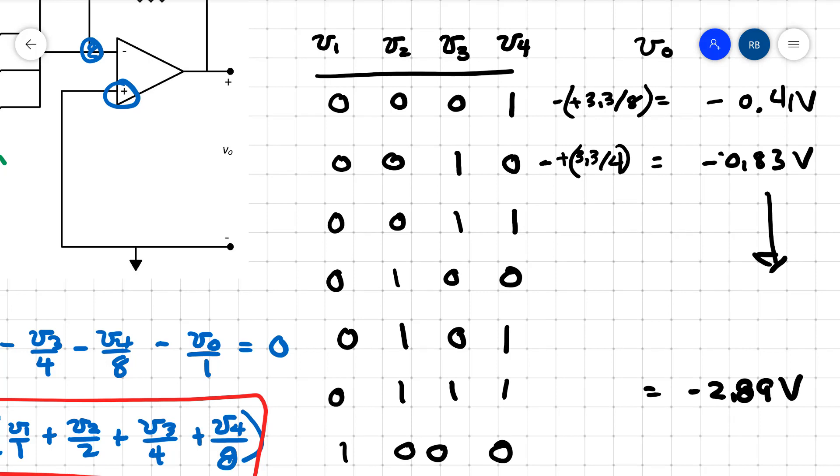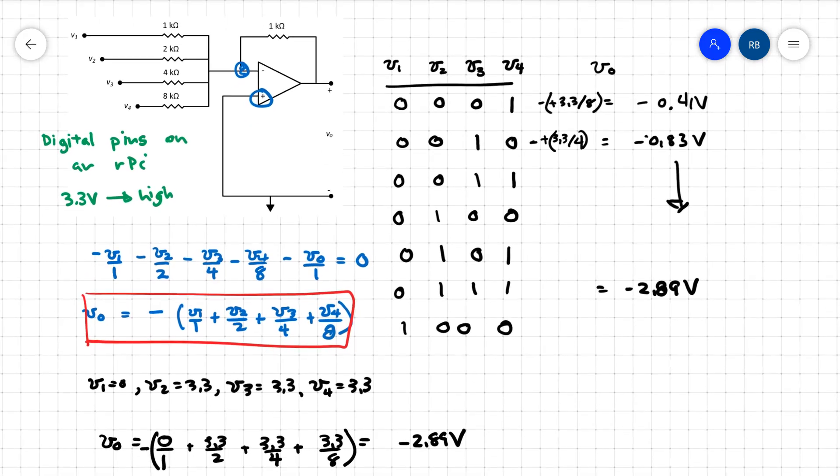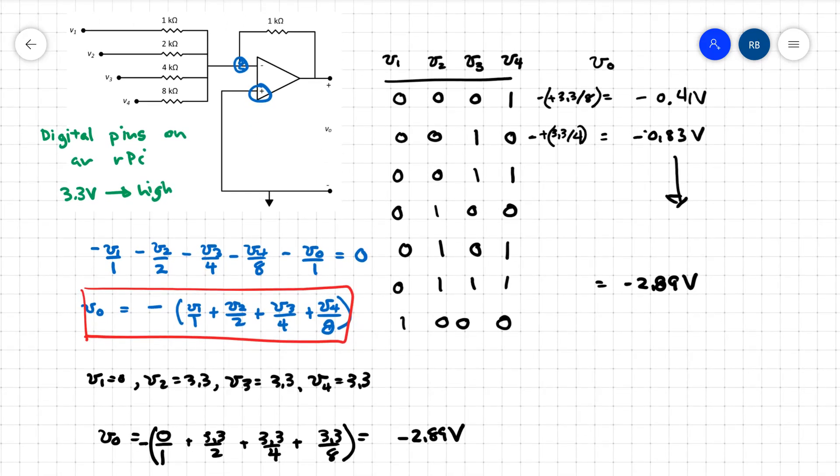This is representative of a D to A converter using a summing circuit and an op amp. You could go ahead and complete the math here. We're using an R-pi with four pins, V4, V3, V2, and V1. There are different contributions based upon binary and then the math here to give us that output voltage.